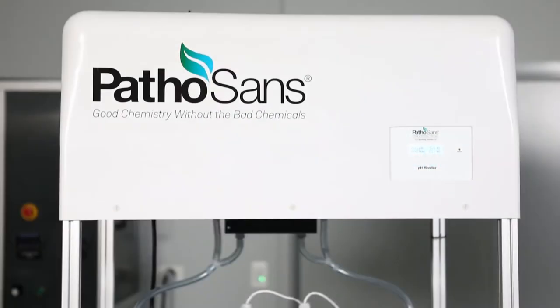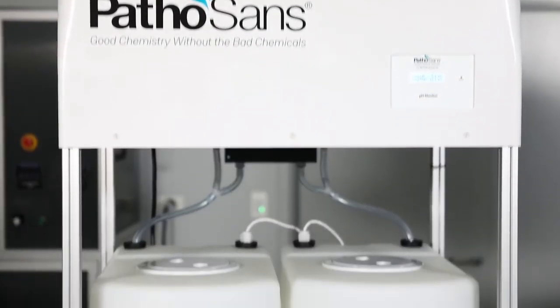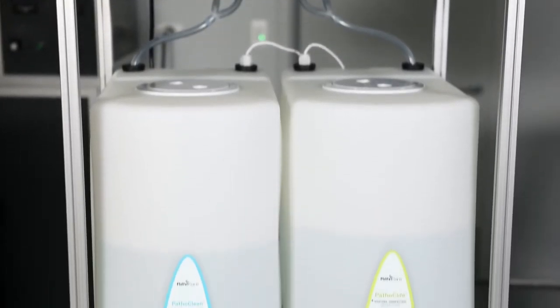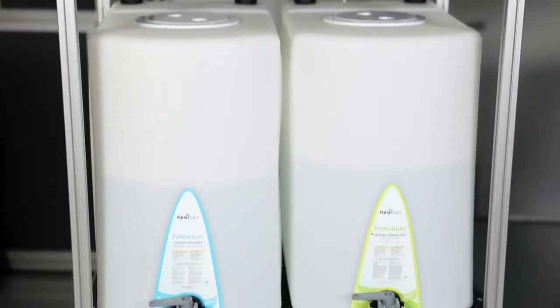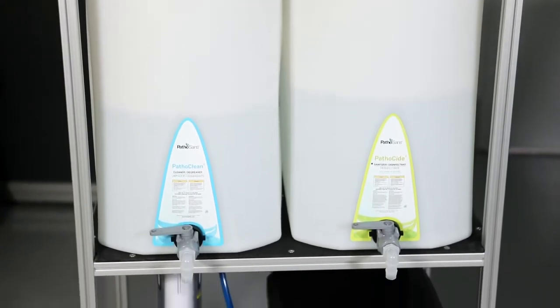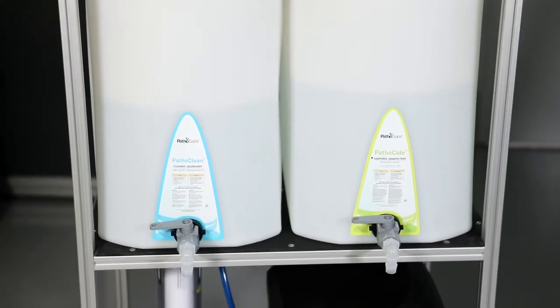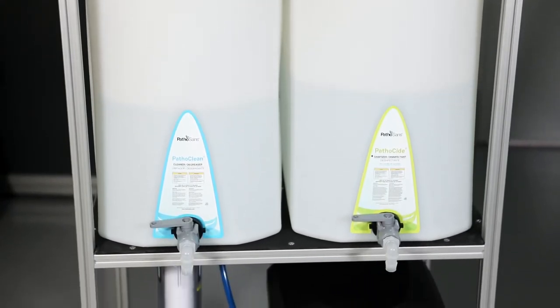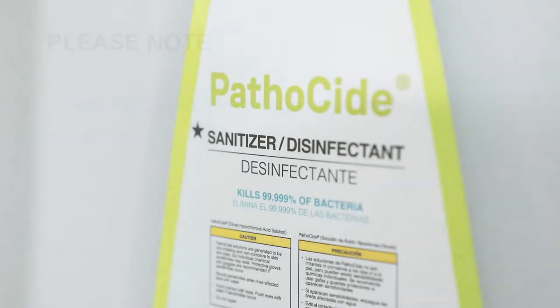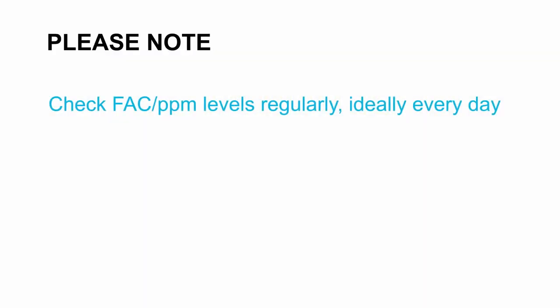Free Available Chlorine, or PPM of FAC, is a direct measurement of the efficacy level in Pathoset. This is a measurement of hypochlorous acid in solution. You'll need to check the PPM of FAC daily or several times a week to make sure your levels are within range.